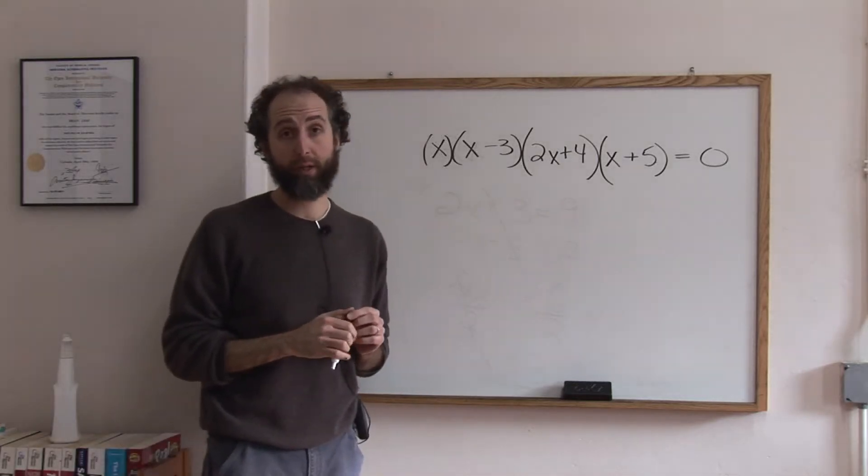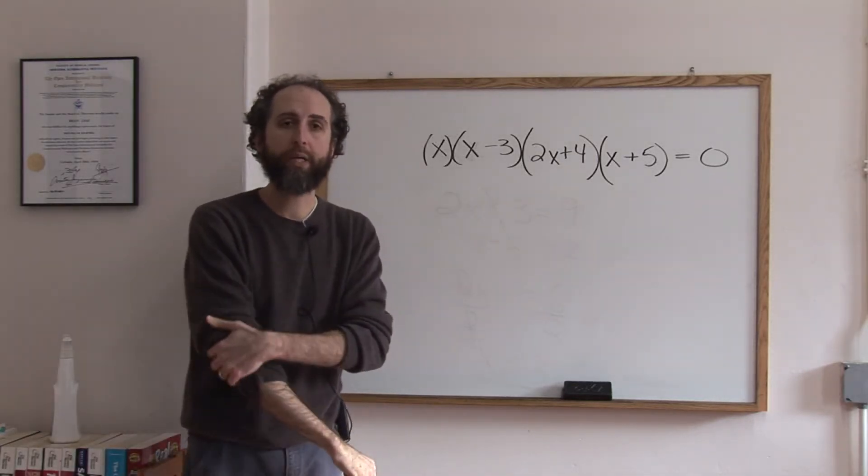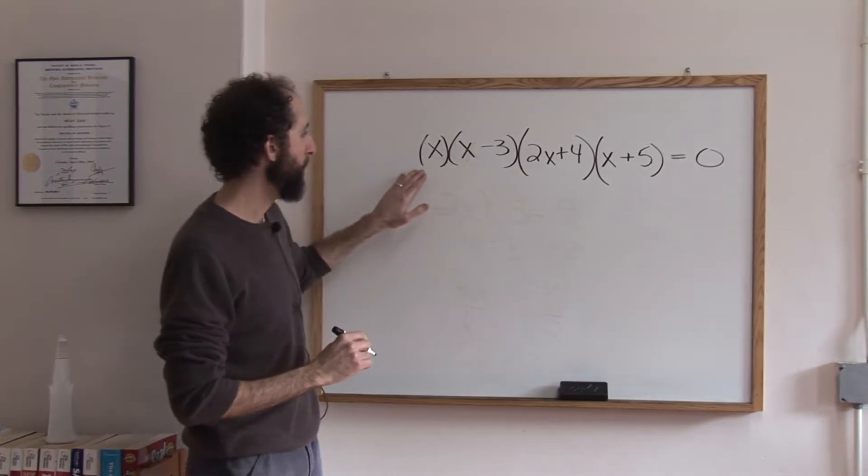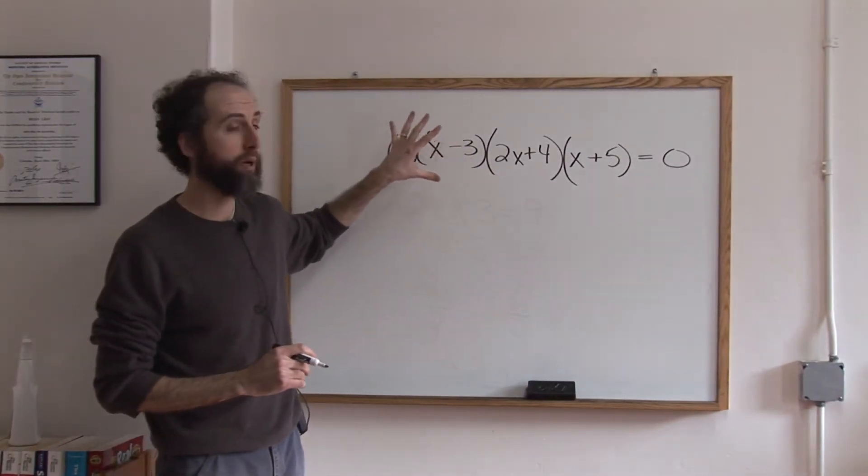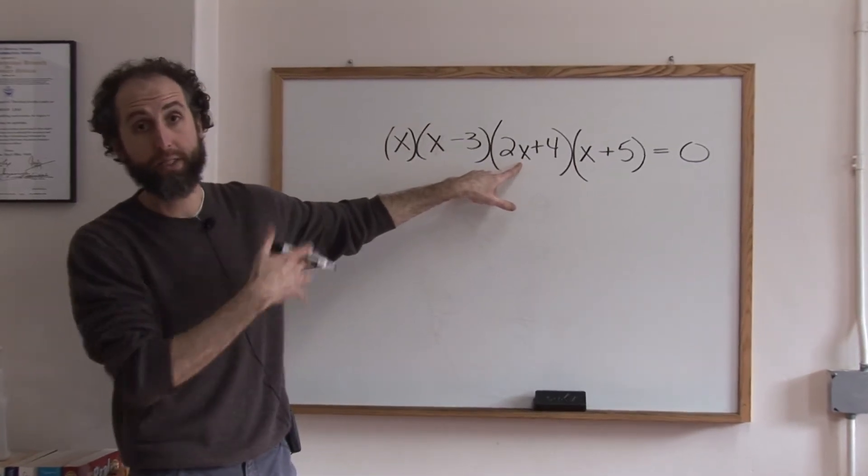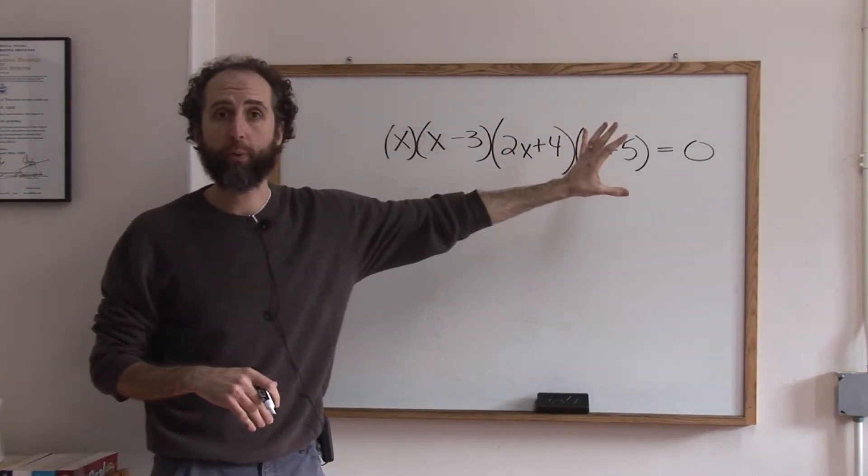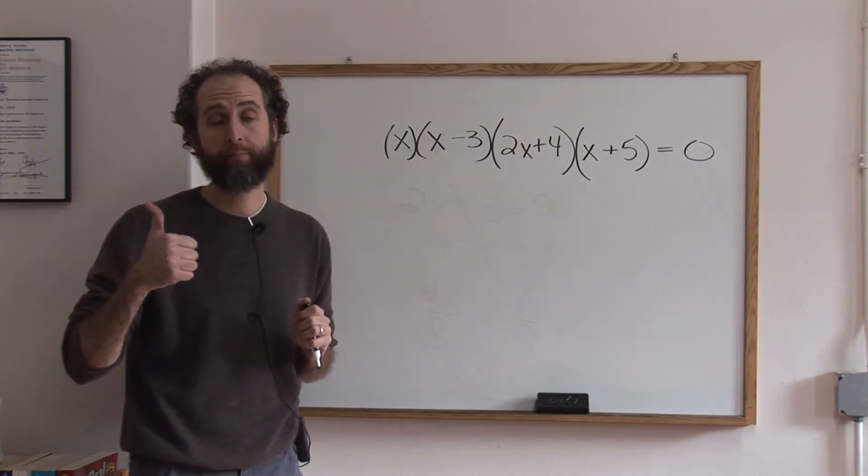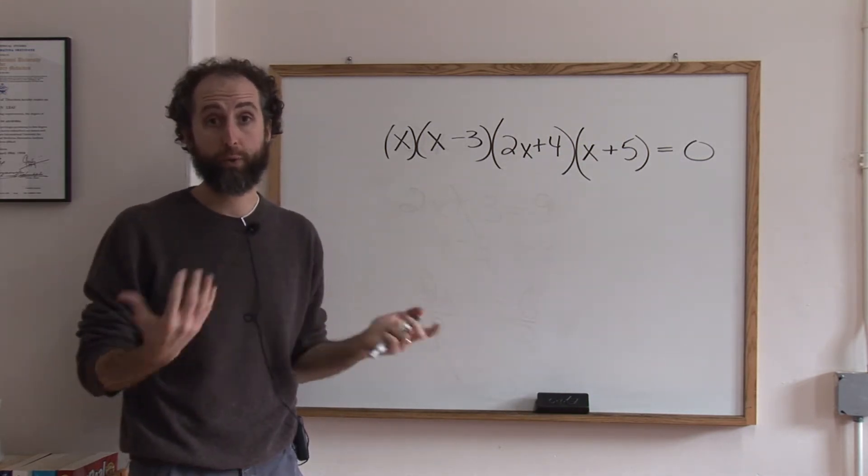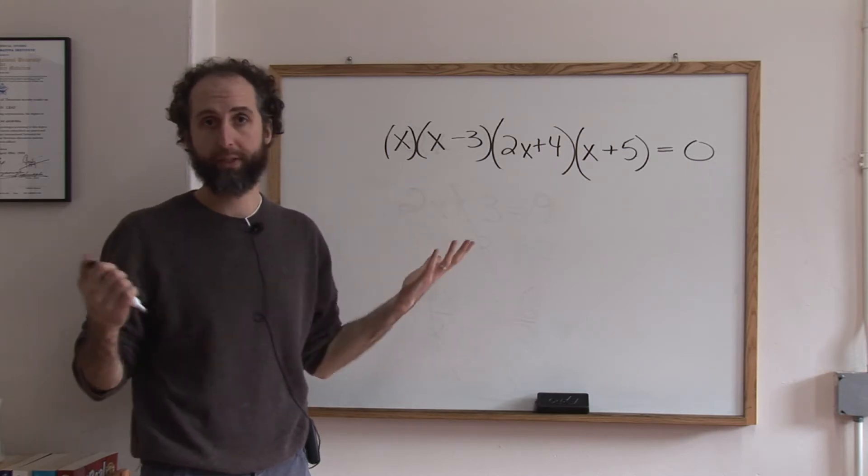Let's talk about how to get the roots of a polynomial. Essentially what that means is that we have a polynomial and we want to know what values for the variable, x in this case, are going to make the polynomial work. We're solving it. Roots, by the way, is a synonym for the word solution or zero. Those are the words we use in algebra for root. They all mean the same thing.